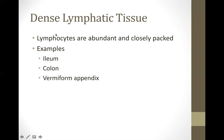Dense lymphatic tissue is characterized by lymphocytes being abundant and closely packed, hence the term 'dense.' Examples of dense lymphatic tissue are the ileum, colon, and vermiform appendix. Take note: these three are not lymphatic organs — only a portion of each organ is lymphatic tissue.